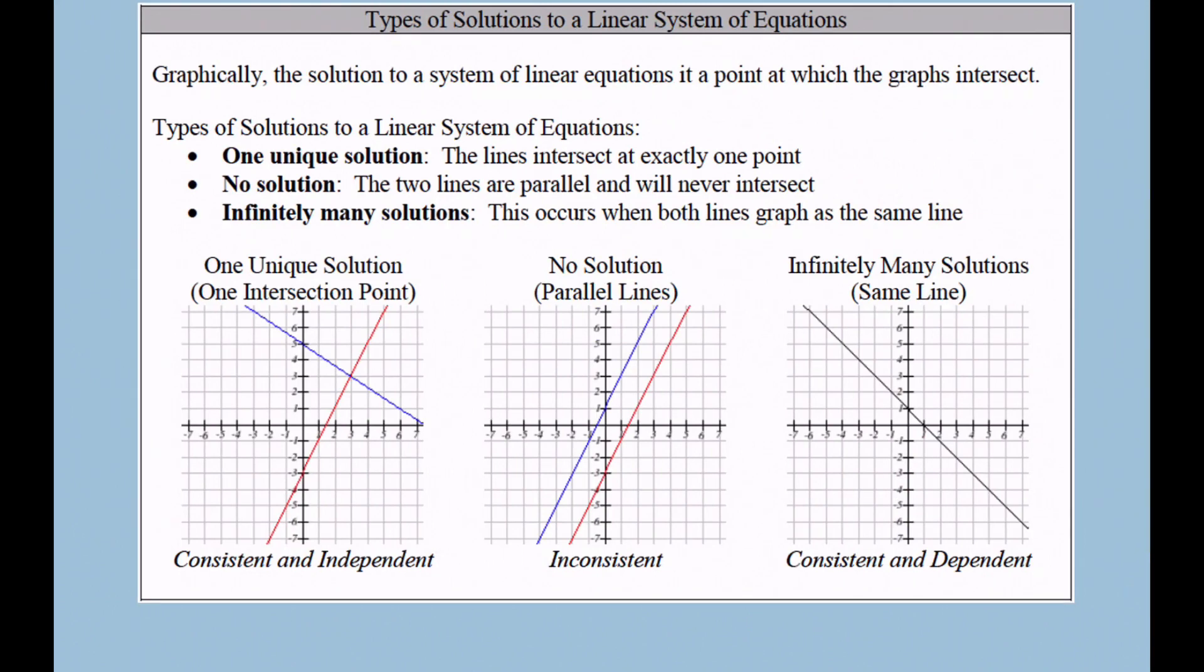So when we're talking about a solution is really that one point where these two linear equations meet. So in other words, we're talking about that right there. This point right here is going to be one unique solution and you can see that's where the two lines are intersecting. So this we would say has one unique solution and it's consistent and independent.